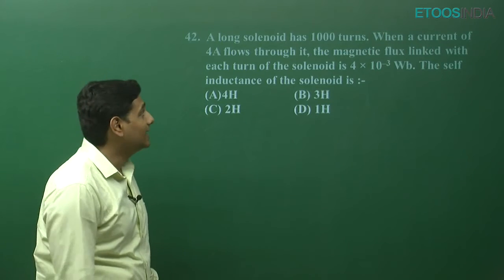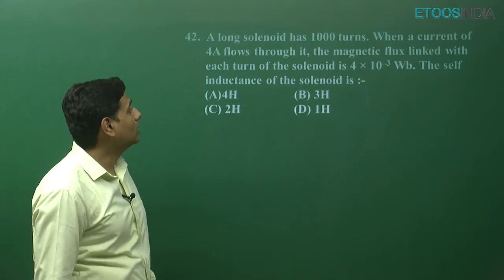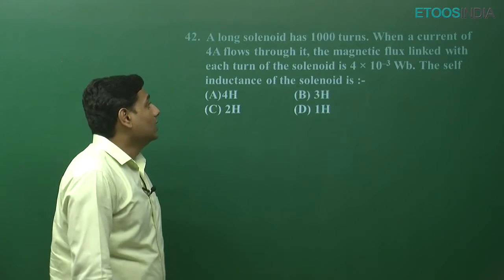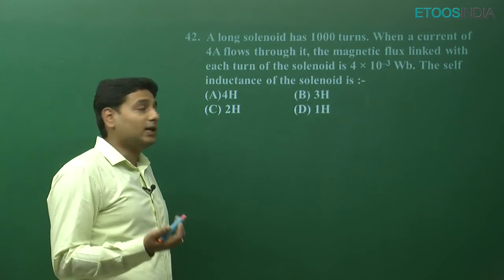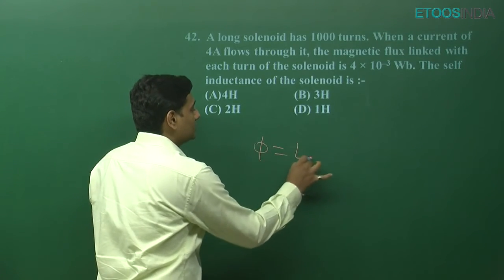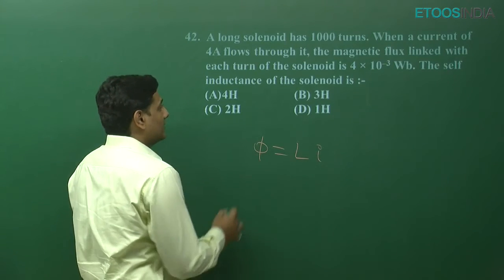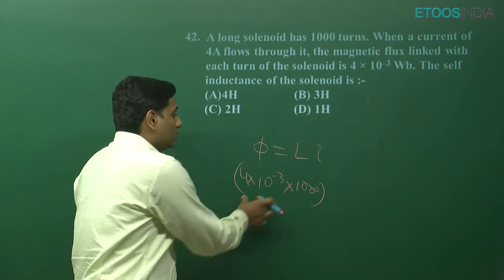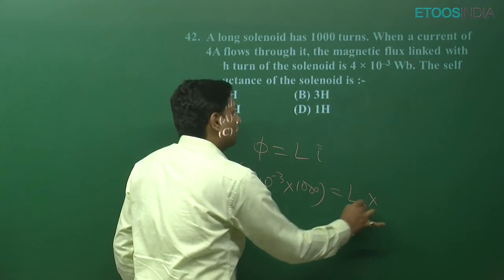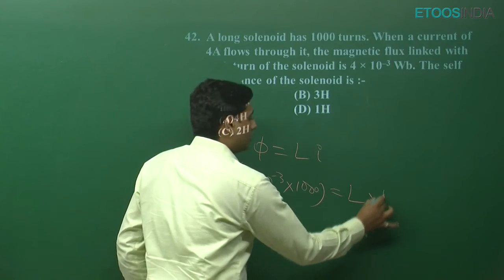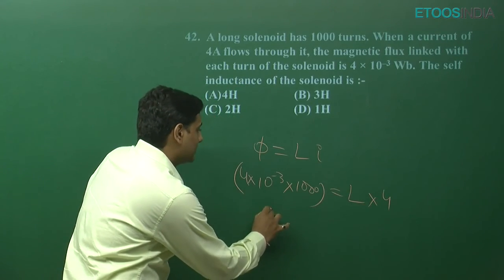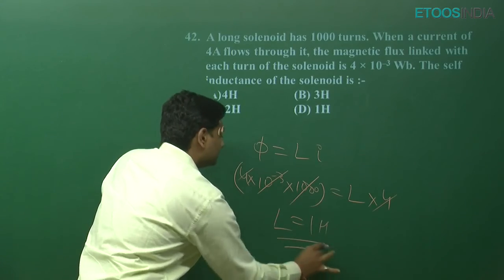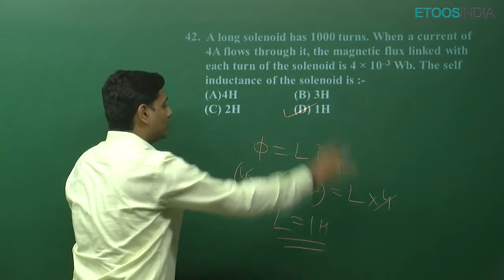Question number 42: A long solenoid has 1000 turns, and the flux per unit winding is 4 × 10⁻³ Weber. We need to find the self-inductance. For a solenoid, total flux = inductance × current. Total flux = 4 × 10⁻³ × 1000 = 4000 units. Current given is 4 ampere. Cancelling 4 with 4, L = 1 Henry. This is our answer — option D is correct.